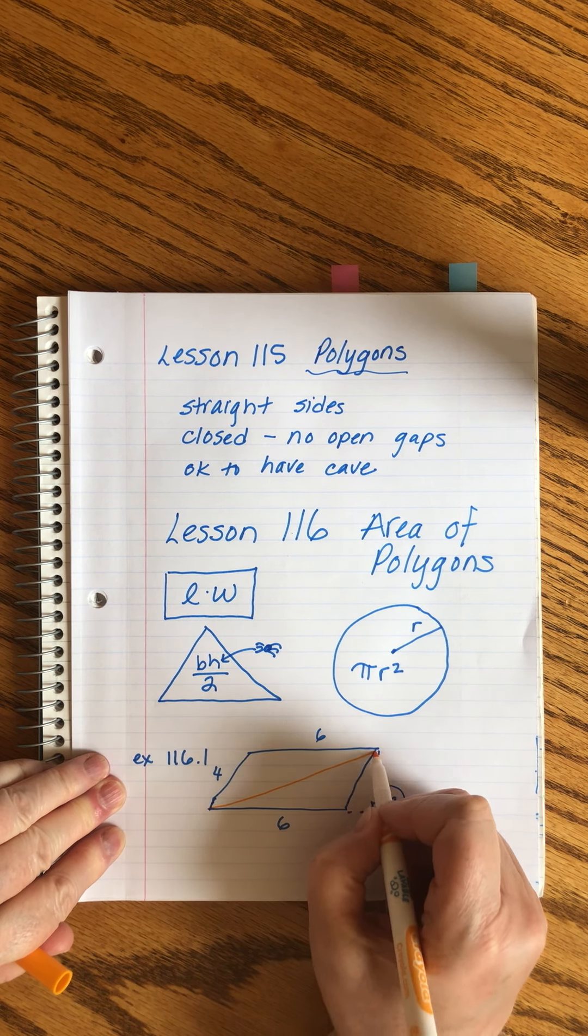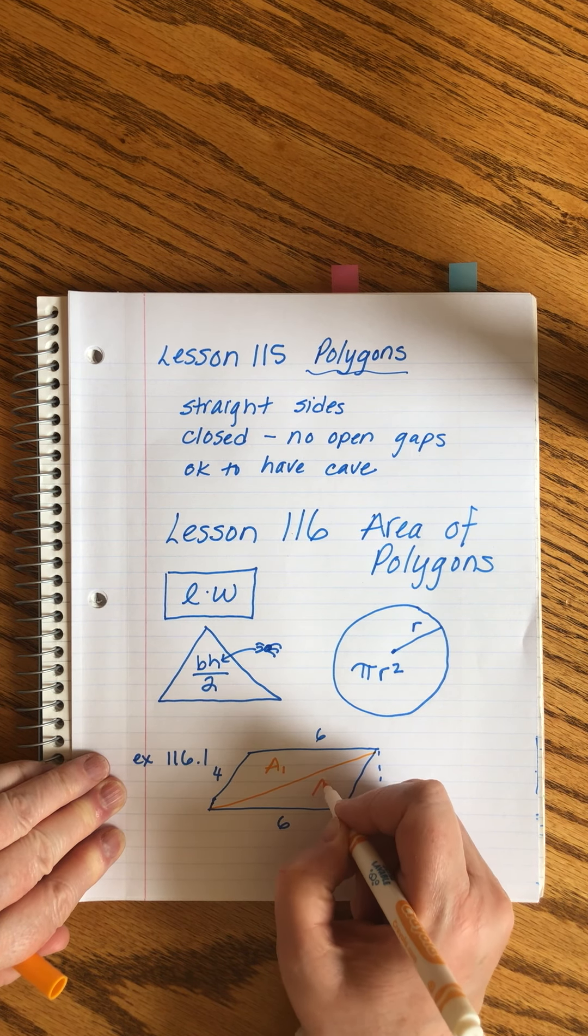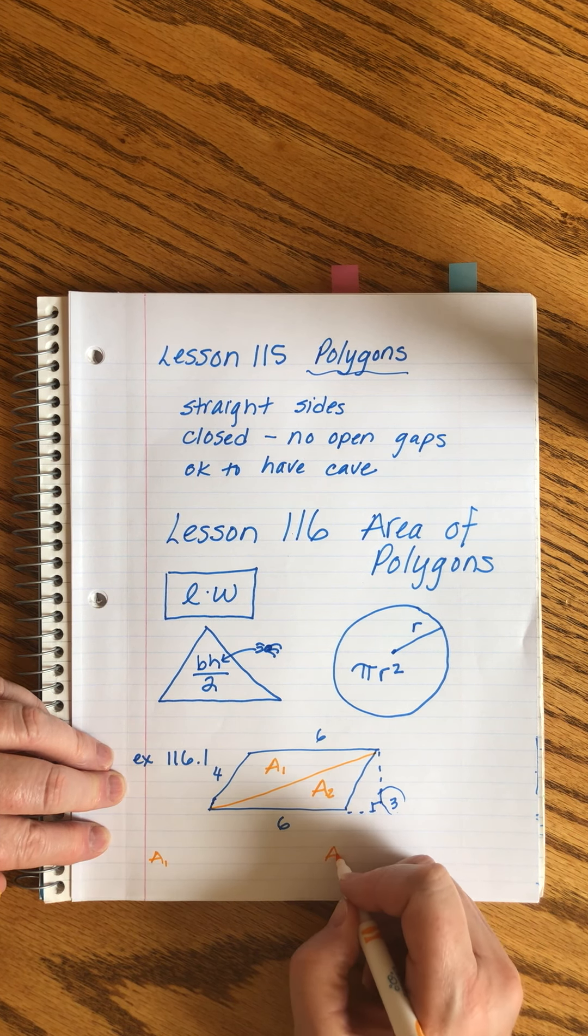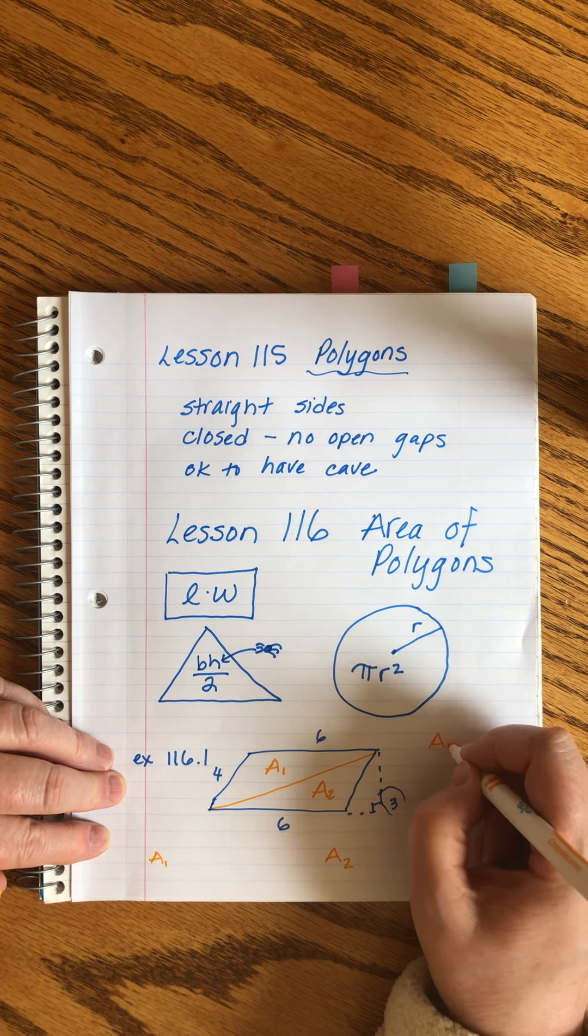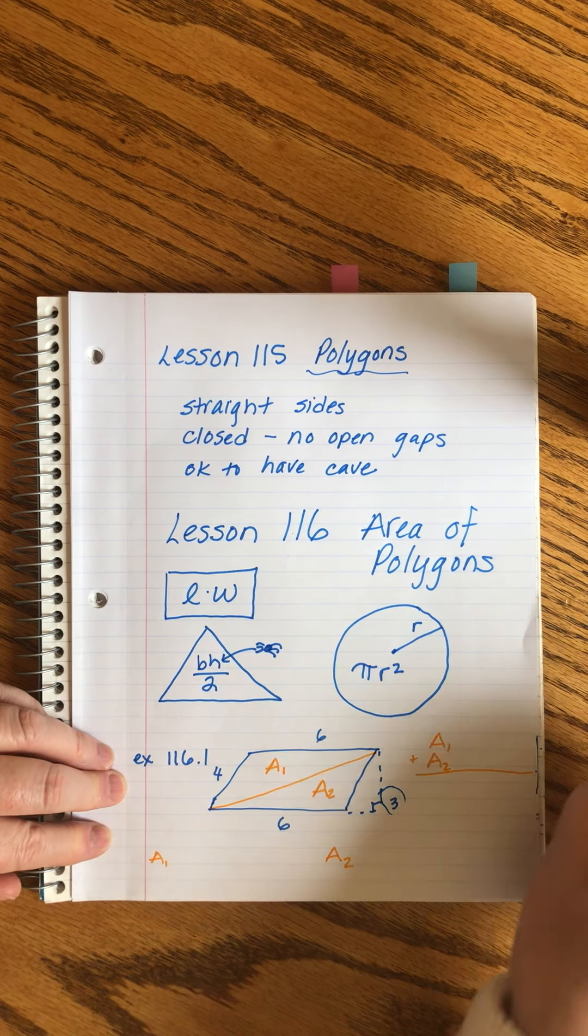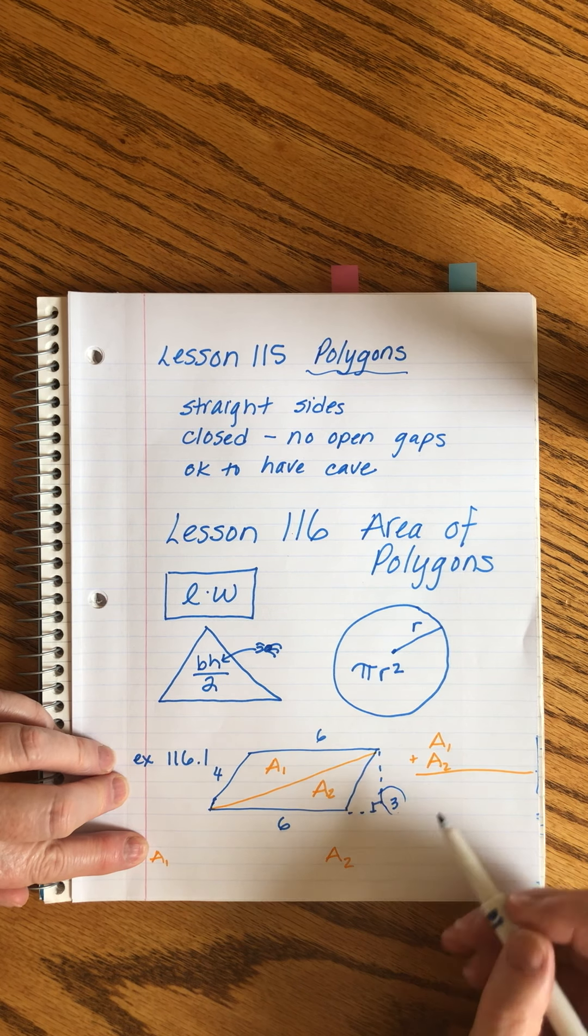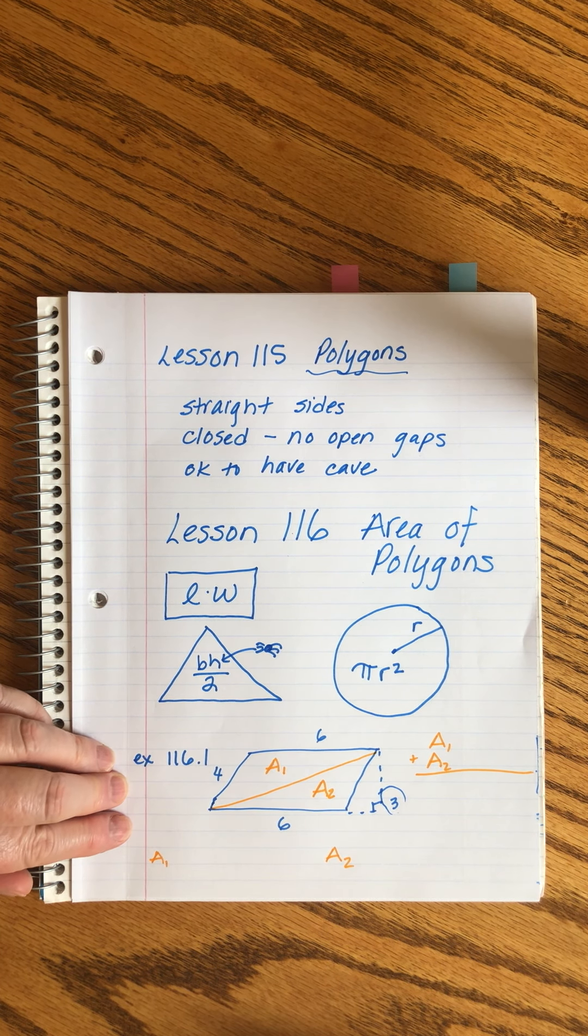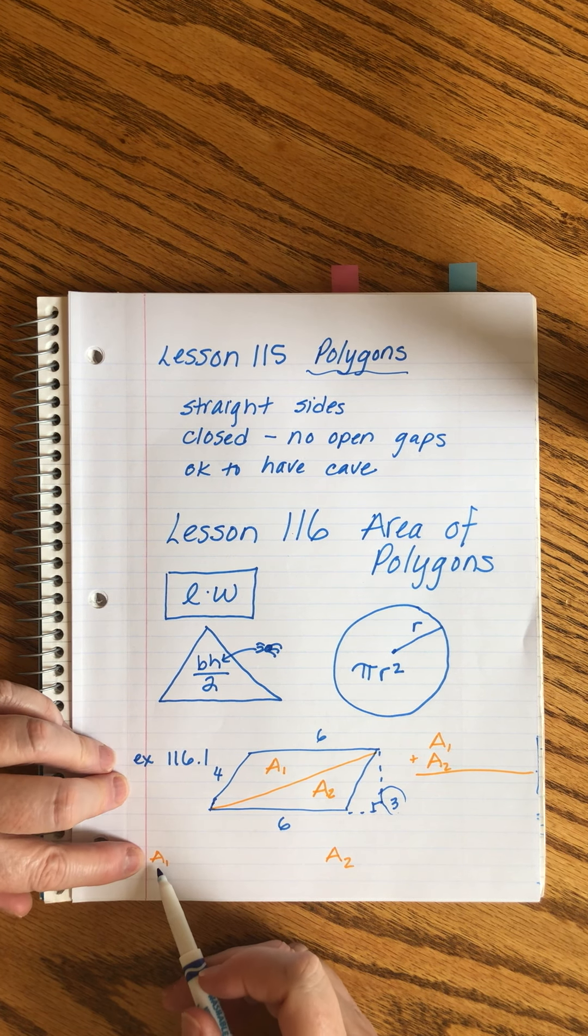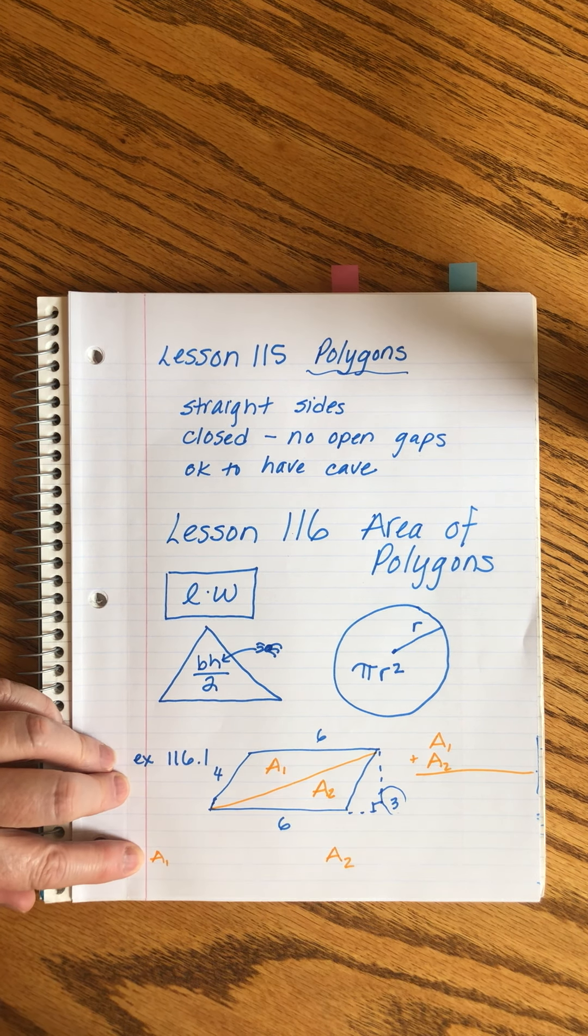We're going to divide this with a diagonal into two triangles. This is going to be triangle one, and this is going to be triangle two. The A stands for area. So what I'm going to do is write this a bunch of times. I'm going to calculate the area of this triangle down here. I'm going to calculate the area of this triangle down here, and I'm going to add them together, and that will give me the whole thing.